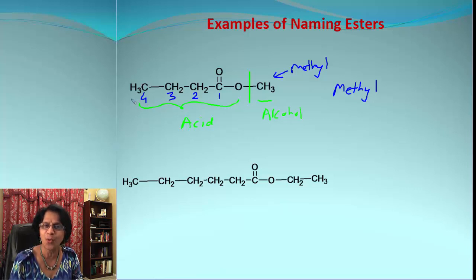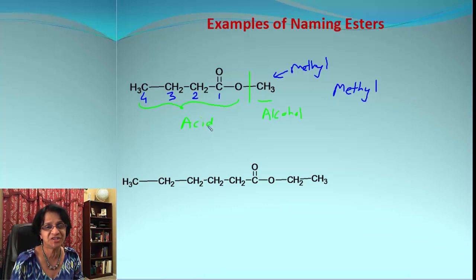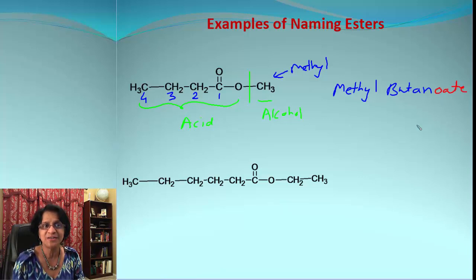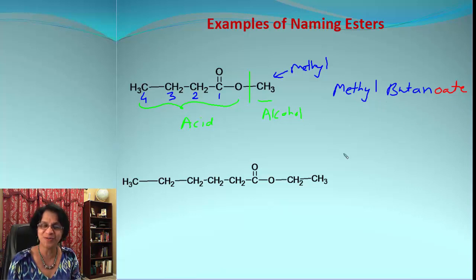We get four carbon atoms — four stands for butane. This was initially an acid, so it was butanoic acid. What we do is take butane and add the ending '-oate', so it is methyl butanoate.